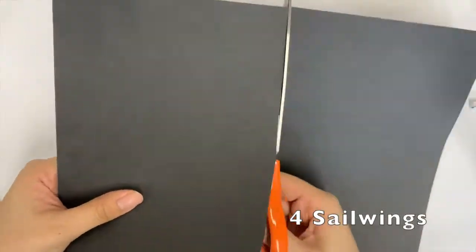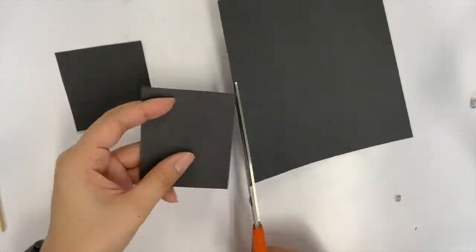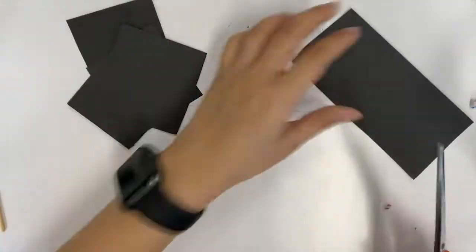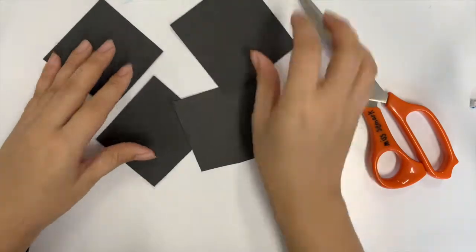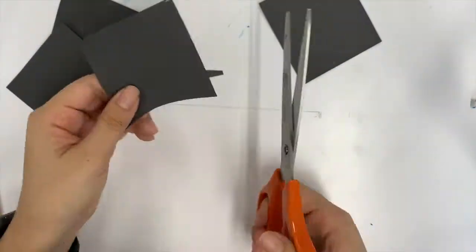We are going to cut the paper into small squares to make a sail wing - we need four of them. Then cut the squares into a sail wing shape.